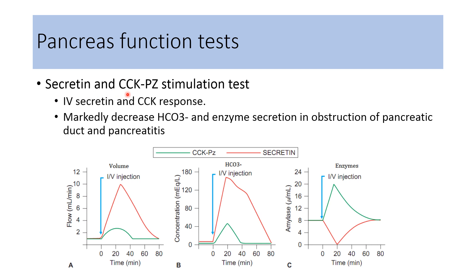Secretin and cholecystokinin stimulation test also gives information about the function of the pancreas. Intravenous injection of secretin and cholecystokinin are given to the patient and the response is assessed. When intravenous secretin is given, it increases volume of pancreatic juice and bicarbonate content, while enzymatic component is less. When cholecystokinin is injected, there is slight increase in volume and bicarbonate, but marked increase in enzymatic component. In patients with obstruction of the pancreatic duct or pancreatitis, there is marked decrease in bicarbonate as well as enzymatic secretion.